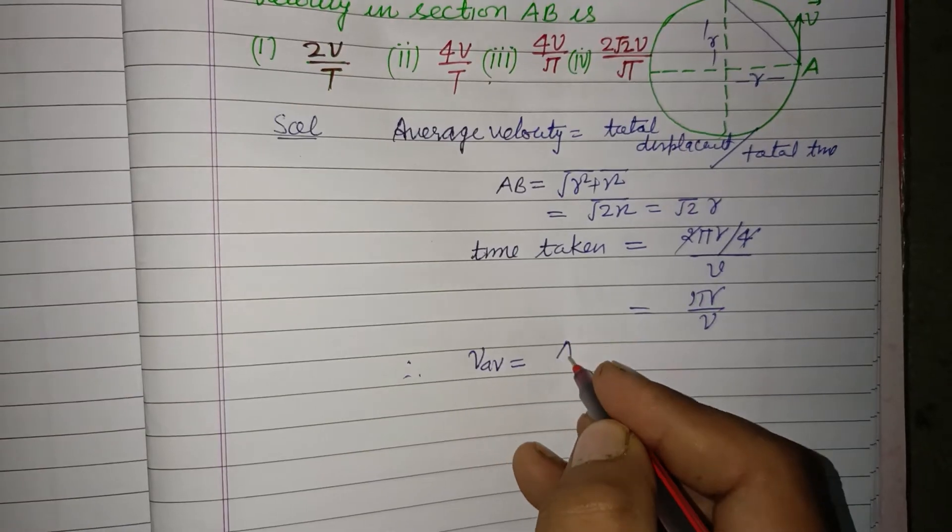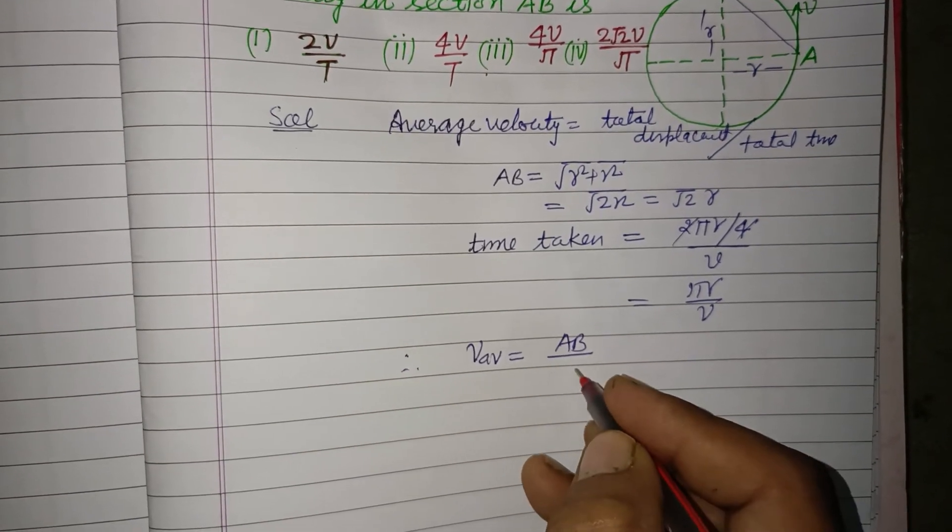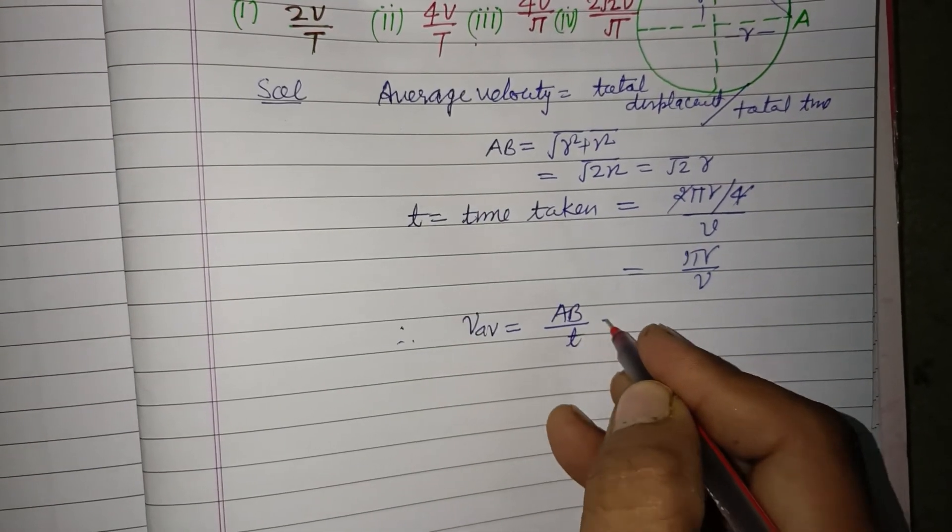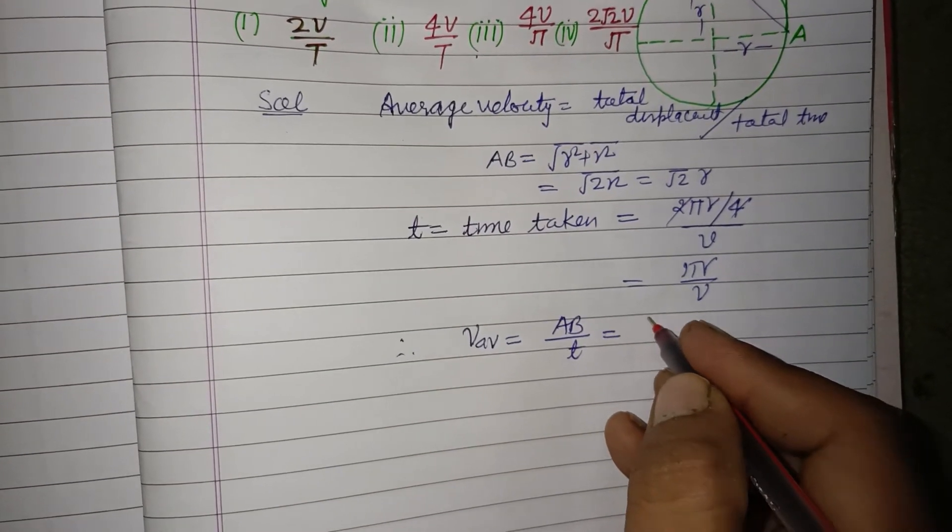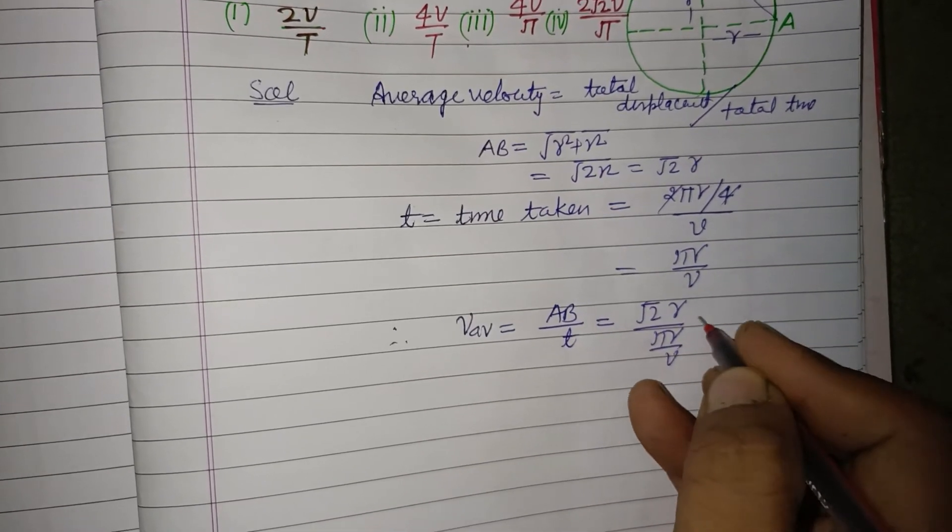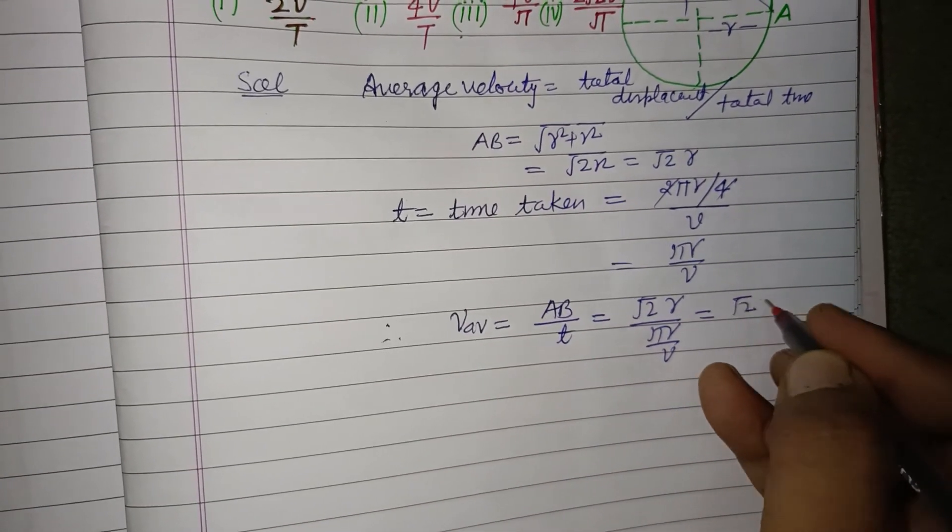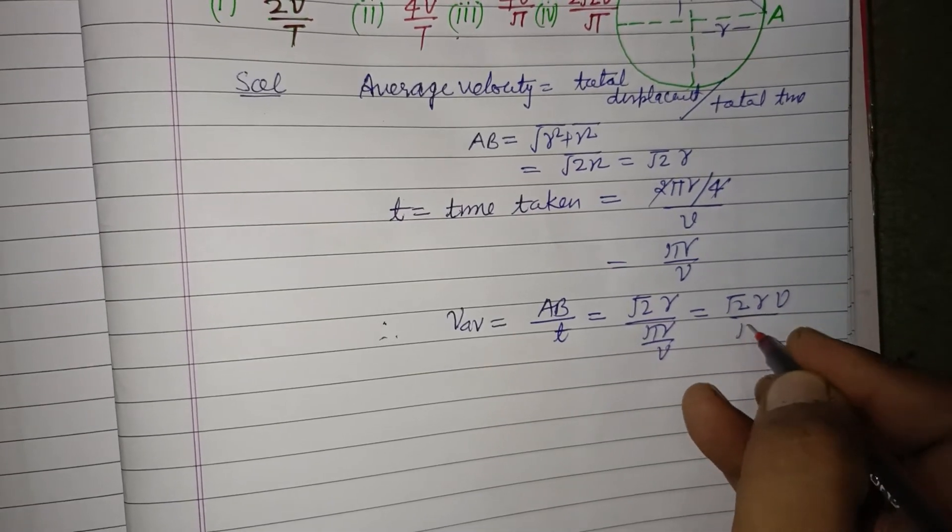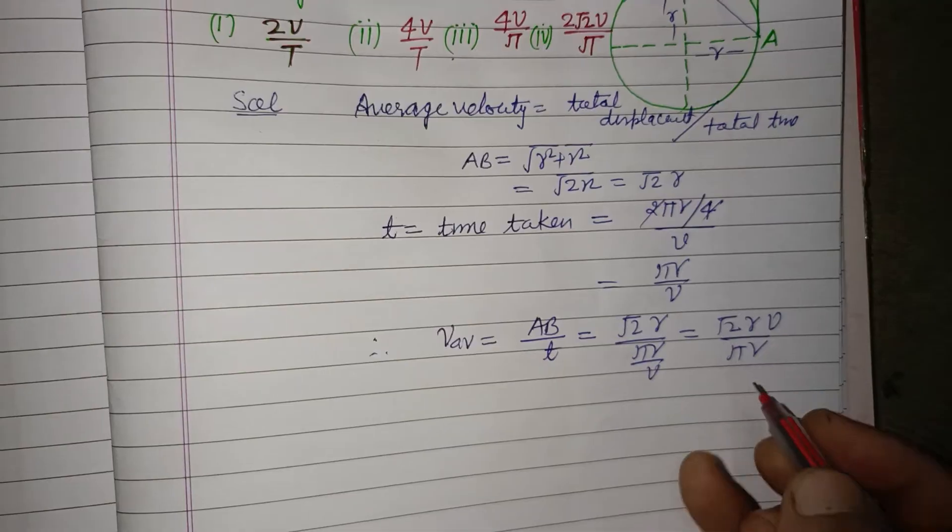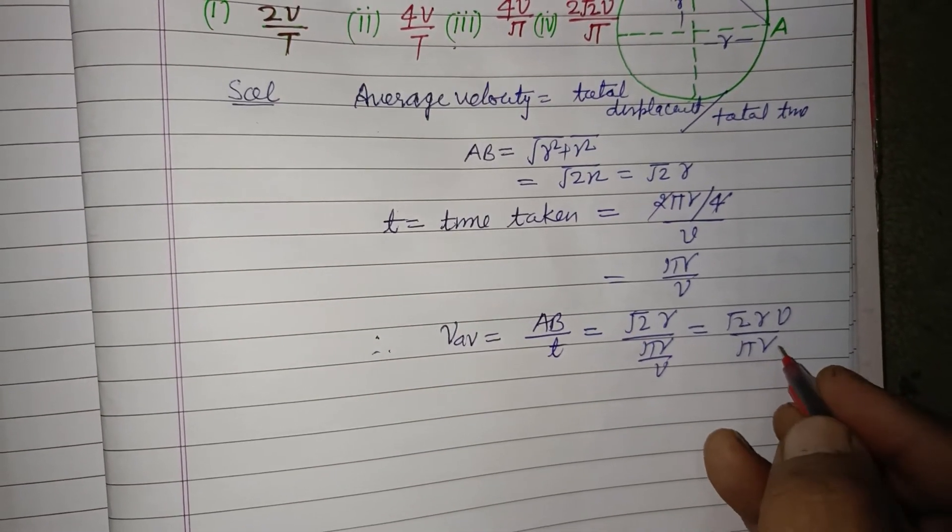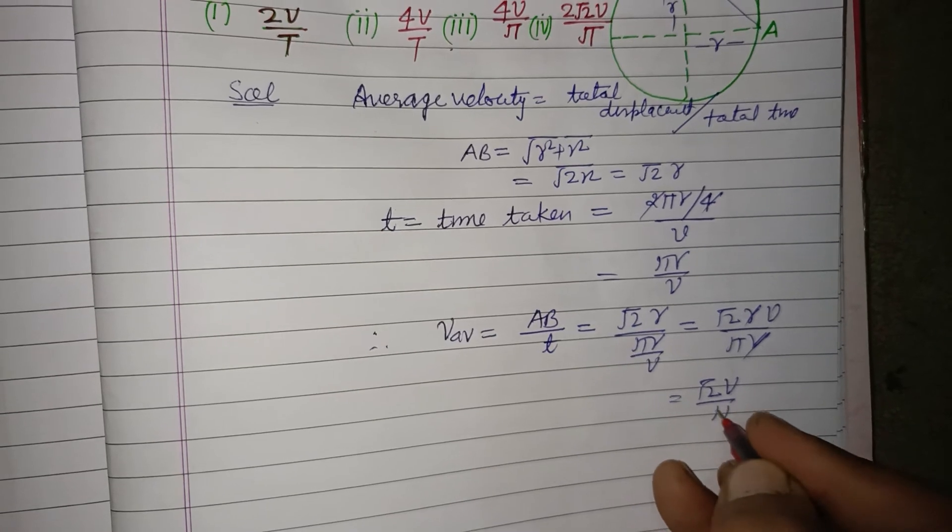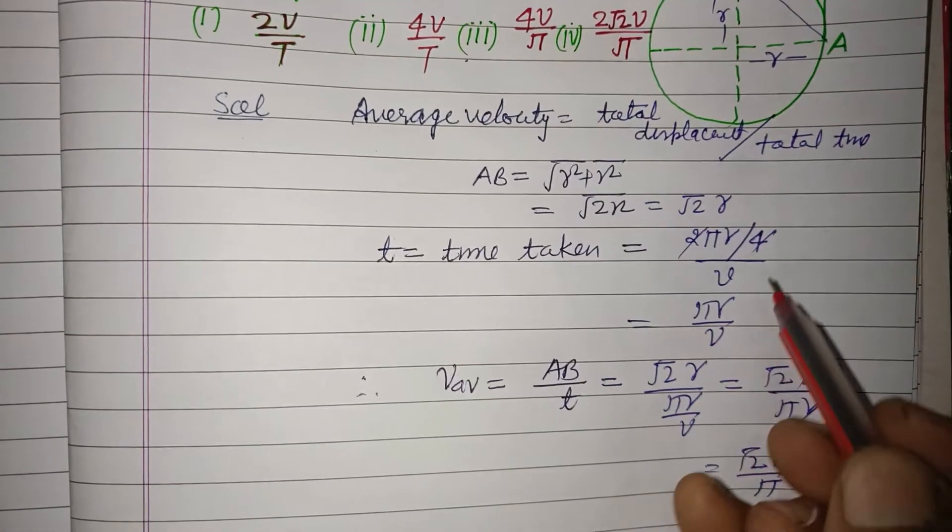So AB is under root 2R upon πR upon V. This is under root 2R times V upon πR. R cancels and under root 2V upon π.